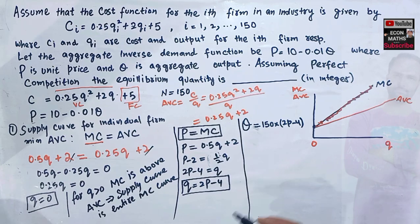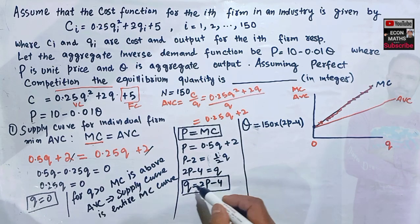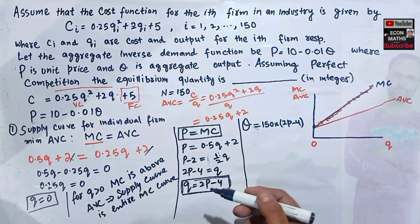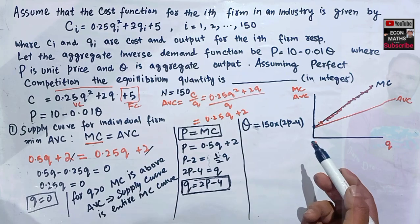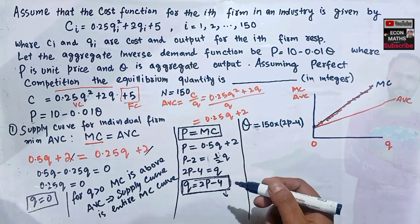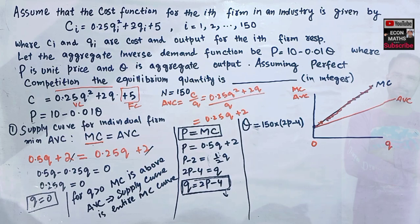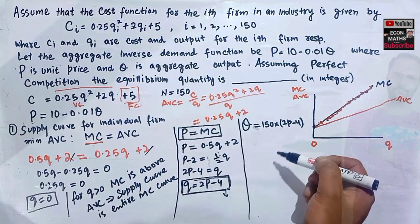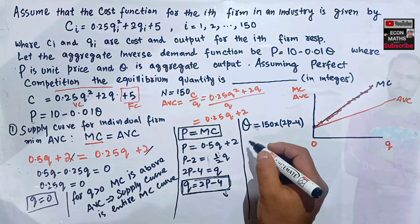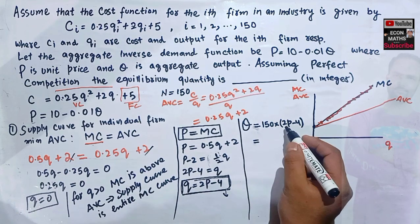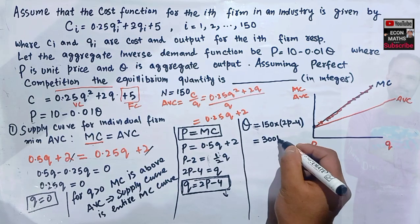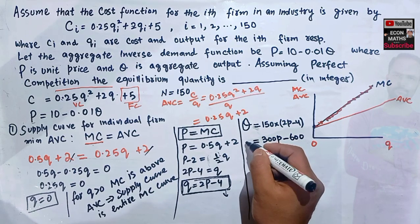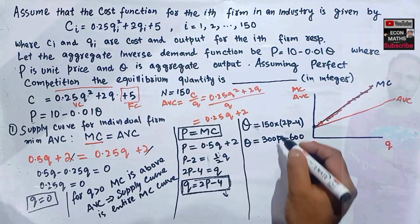Calculating: Q = 150 × (2P − 4) = 300P − 600. This is our market supply curve expressed with Q as a function of P.